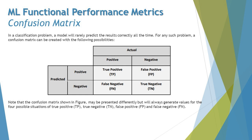For any such problem, a confusion matrix can be created with the following possibilities. This table represents two important things: the Predicted — what the ML model is reflecting — and the Actual — what is real. For Predicted, we have two outcomes: a positive outcome and a negative outcome. Similarly, the Actual has positive and negative.